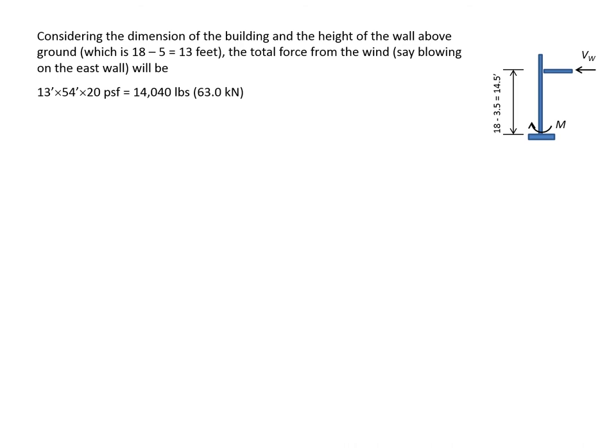The wall height to the footing is 14.5 feet, so the moment at the footing is 14.5 × Vw. However, for computing shear force we use 13 feet above ground. Therefore, the in-plane shear in each north and south wall is 14,040/4 = 3,510 pounds.